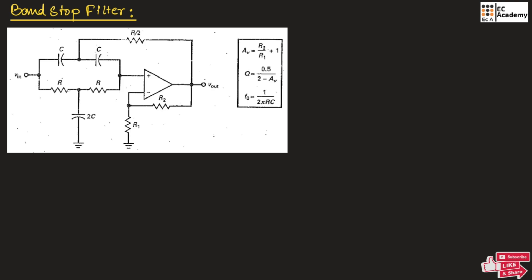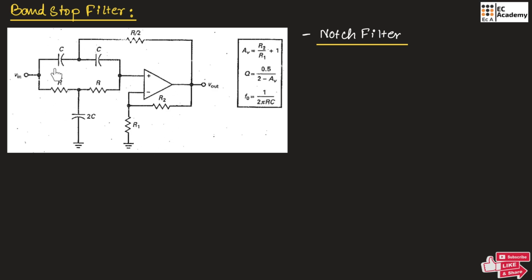The band stop filter is also known as notch filter. This is the circuit of the band stop filter. At the filter stage, we are having two combinations of resistor as well as capacitor, as shown in this figure.